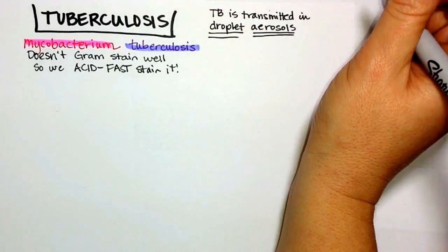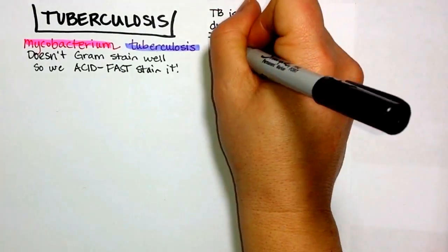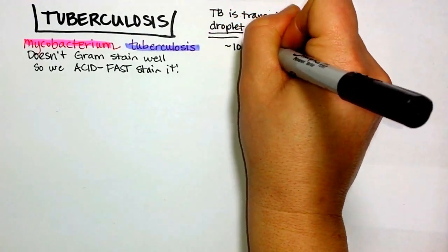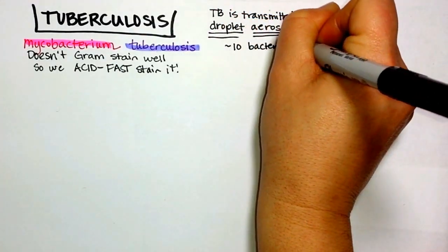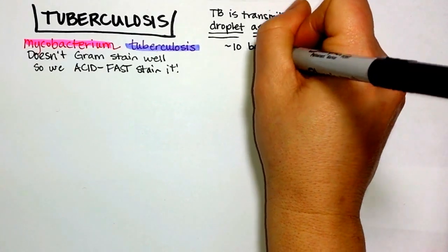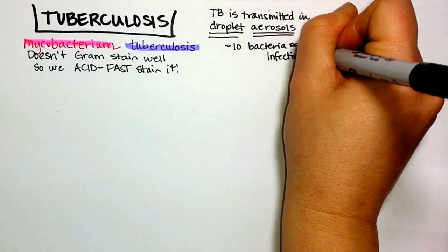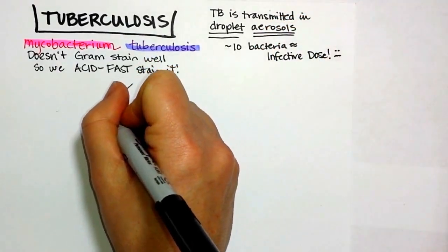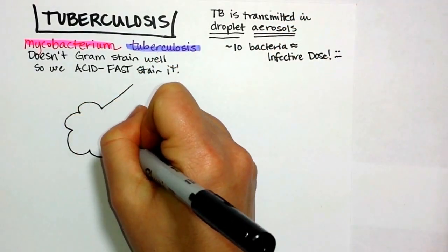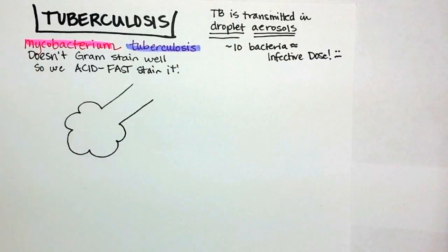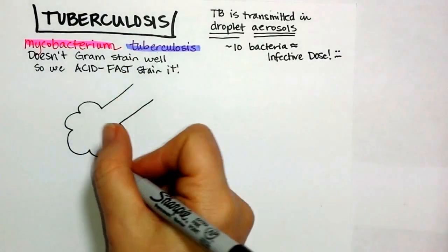TB is transmitted in droplet aerosols — little droplets of water in the air that, with as few as just 10 bacteria, can be an infective dose.